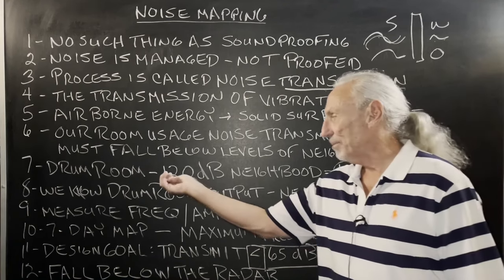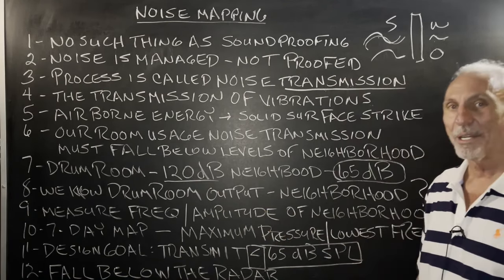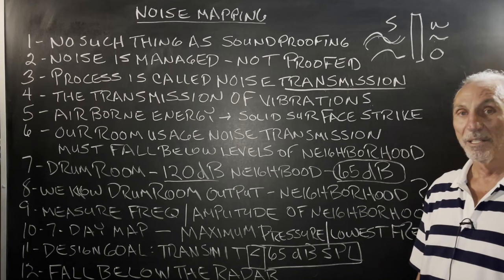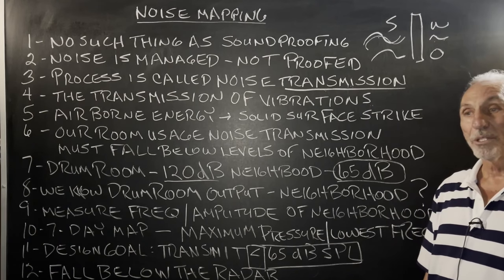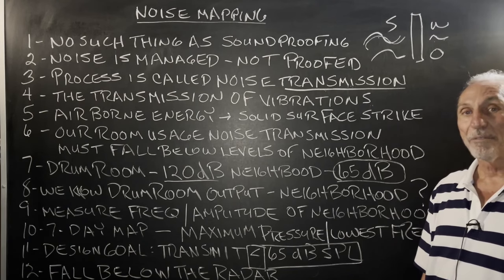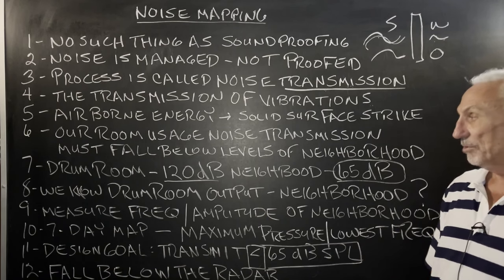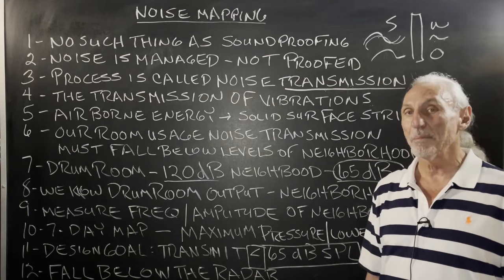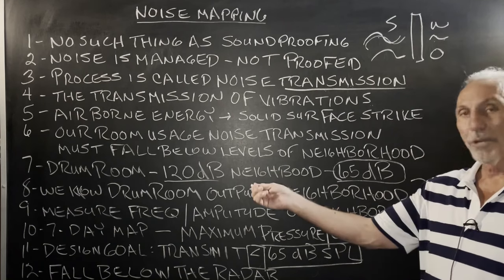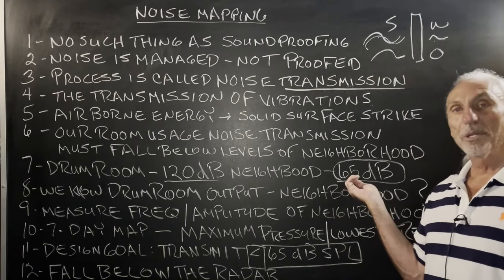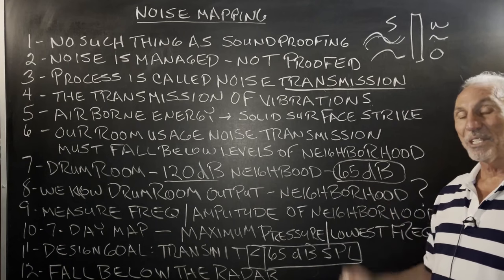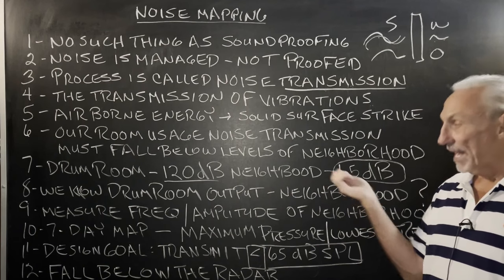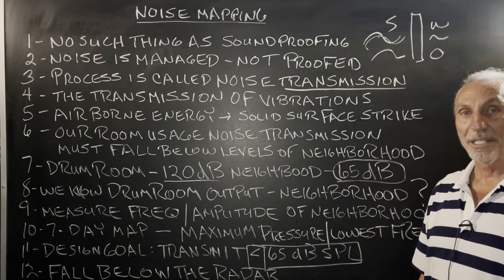Let's take a drum room. Drum rooms generate 120 dB of energy — they're the second largest energy-producing source of any instrument. What's the first? A gong. We have a gong in our studio, it's 24 inches — we get 145 dB SPL out of that. No drum kit can do that. So 120 dB is about the max. If we put our drum room in a neighborhood where ambient noise levels are 65, we're going to be twice what the neighborhood is. That's going to get a knock on your door, a ticket, a citation, or even an arrest.